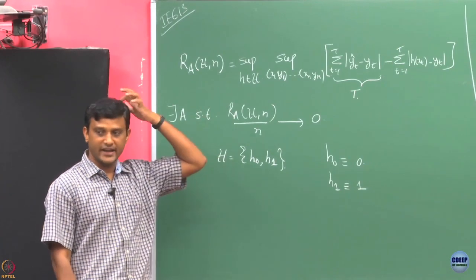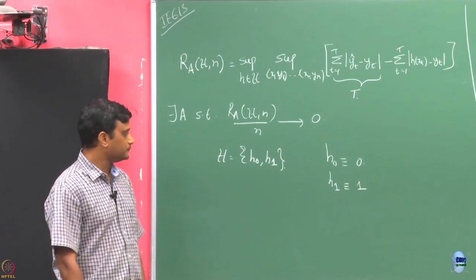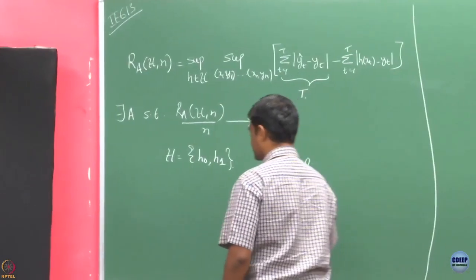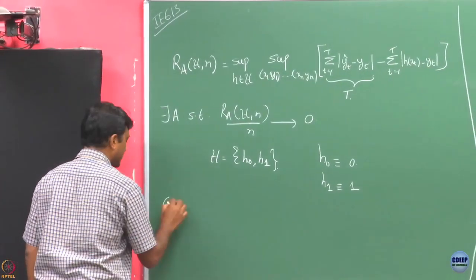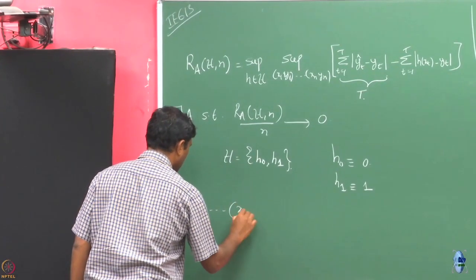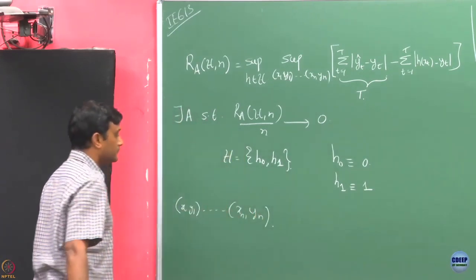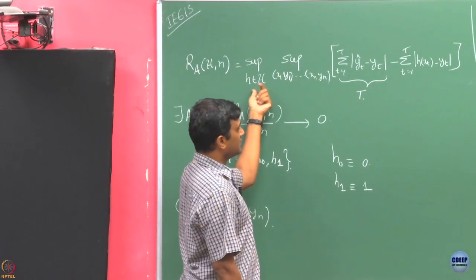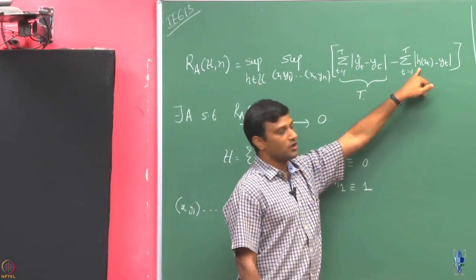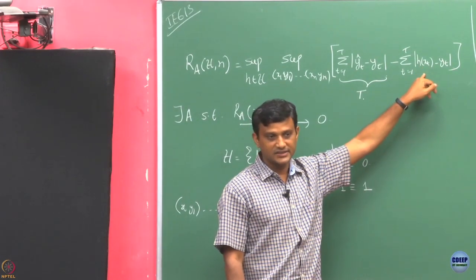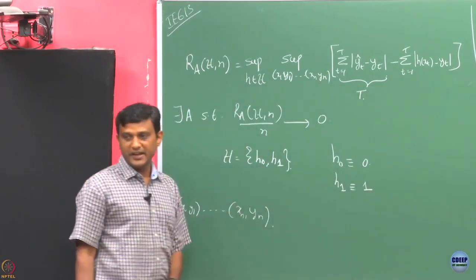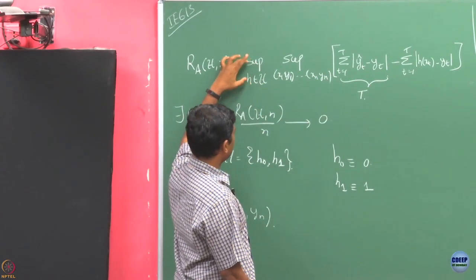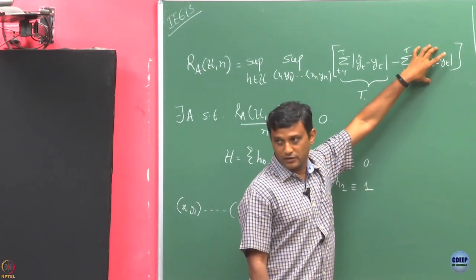Let us try to understand what this quantity is going to look like for this specific example. Is this hypothesis class clear? This is a trivial hypothesis class. Now, given any sequence of labels, since I am doing the supremum over H, I will look at this quantity for only two possible H values: H0 and another H1.